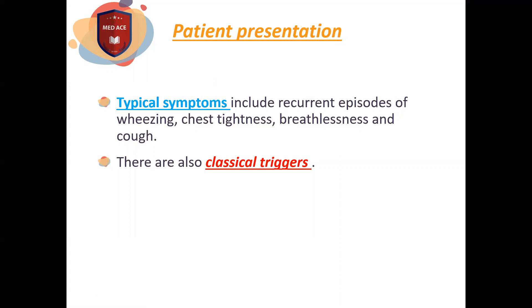The classical symptoms of asthma are wheezing, chest tightness, breathlessness, and cough. Classical triggers causing these symptoms include upper respiratory tract infection or chest infection, pollen, dust mite, smoking, strong perfumes, chemical vapors, certain drugs like aspirin, non-steroidal anti-inflammatory drugs, or beta blockers.